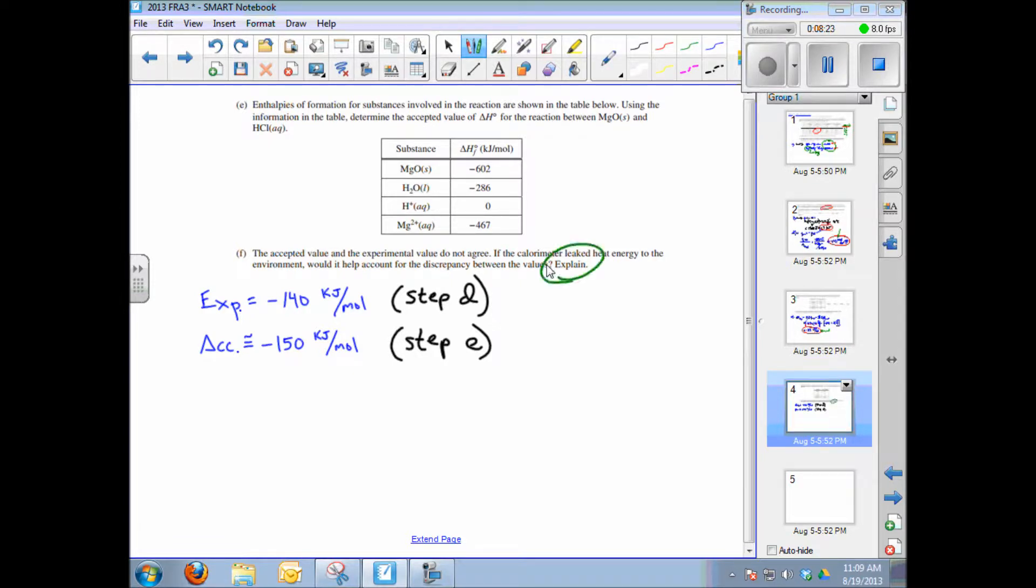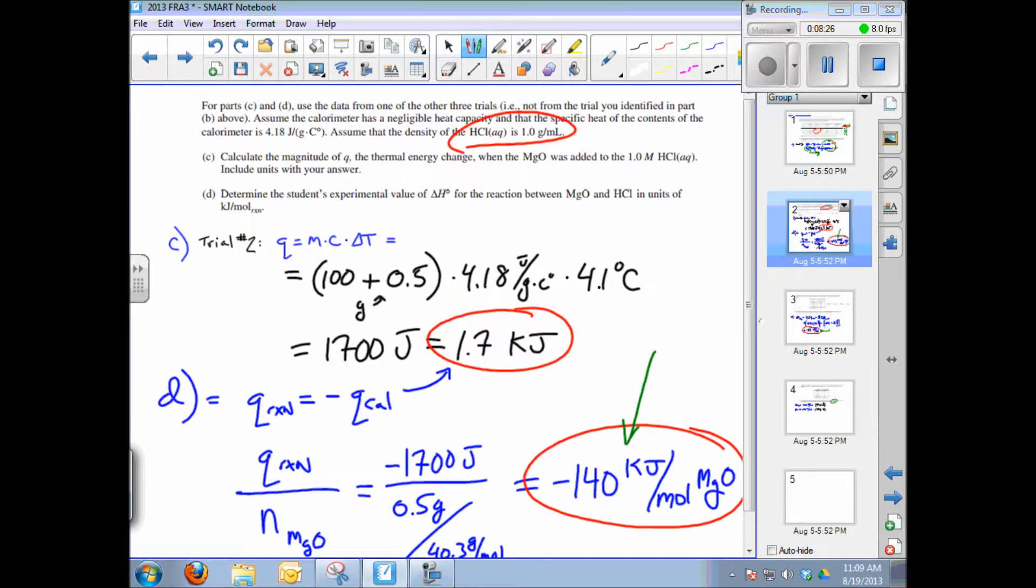You always remember to explain. Why? We measured a delta T of 4.1 degrees Celsius in the solution. Some heat was lost to the calorimeter and eventually to the atmosphere. If it had not been, this value of delta T would be higher, let's say 5 degrees Celsius. If it were, we would have calculated a higher value for the Q of the reaction, the heat of the reaction, say 1900 joules or 1.9 kilojoules. And therefore, this value, which is substituted in here, we would have ended up with a larger value of the experimental heat.